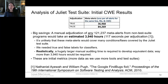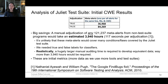It's unlikely that randomly selected meta alerts from natural programs would cover many of the conditions covered by the Juliet test suite, which is specially created to cover not only many CWEs but many subtypes of a particular CWE. We also needed true and false labels for classifiers with good precision, which is a problem in most manual adjudication datasets. Realistically, a much larger manual auditing time would be required to develop equivalent data.